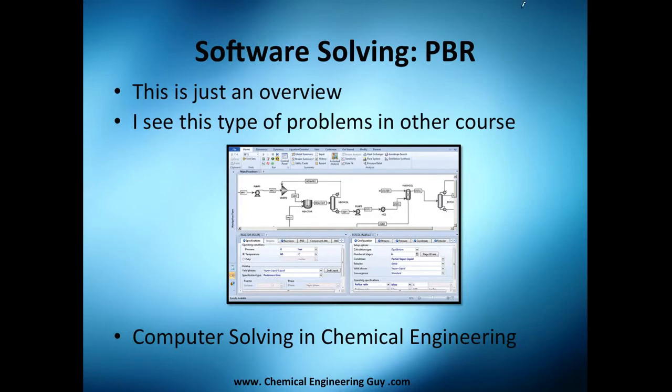We've seen before that we have a PBR, its function of the rate law and the design equations, which at the same time depend on the conversion. We have F2 which also depends. This comes from Ergun equation, this models pressure drop, and this models the rate law and the design equation.